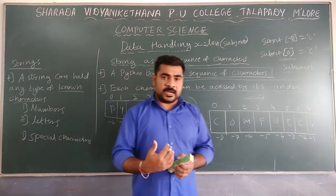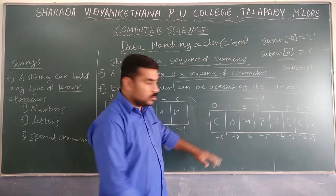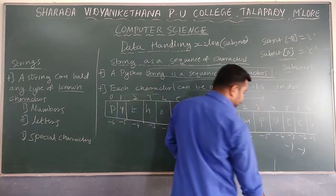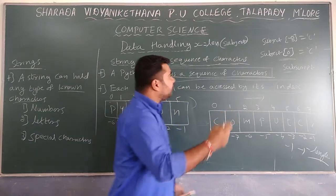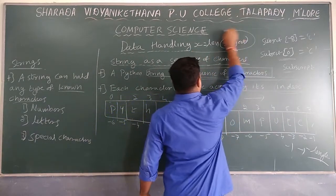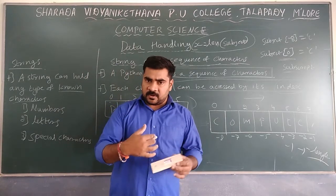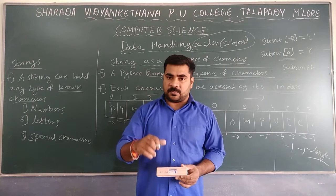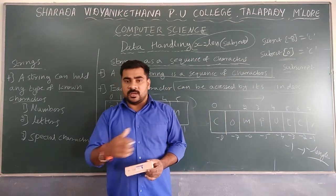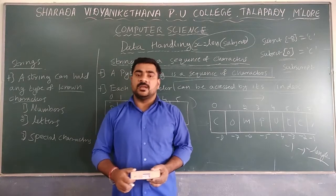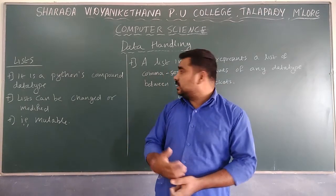This is about the string data type. If you want to find the total length, there is the length function. We will study this in detail in the string chapter. Now we will move to one more type of data type — that is list. The core data types are: first numbers, then strings, and next is list.